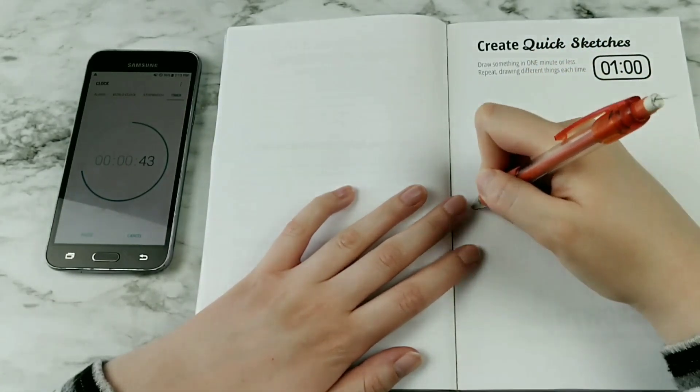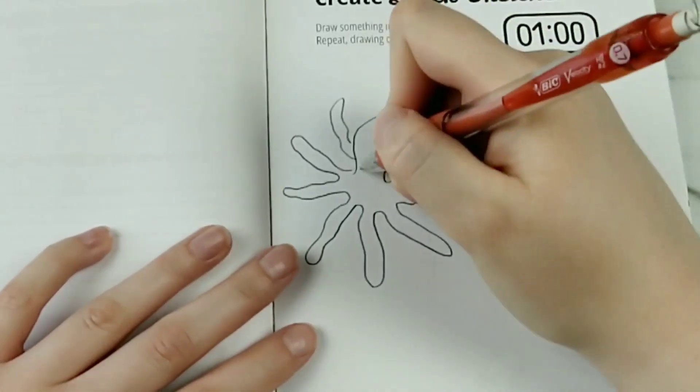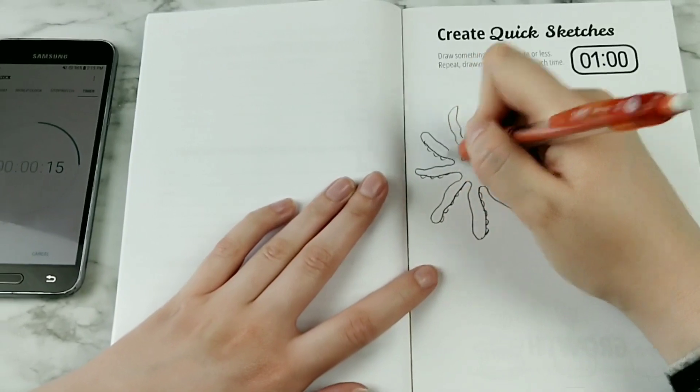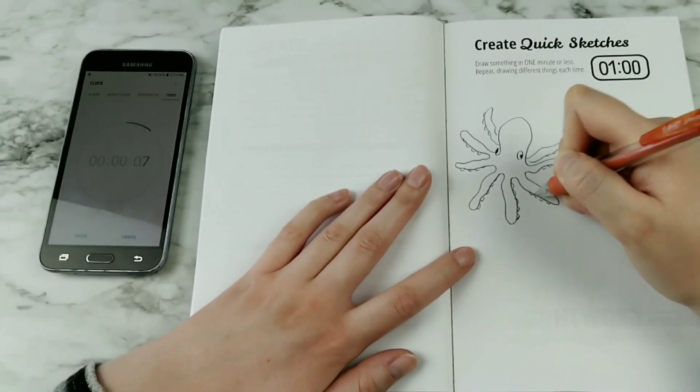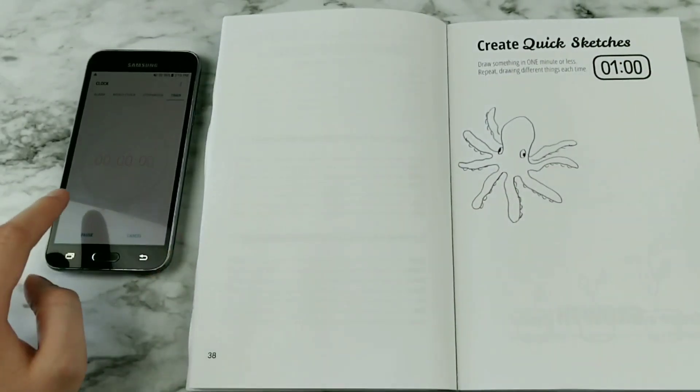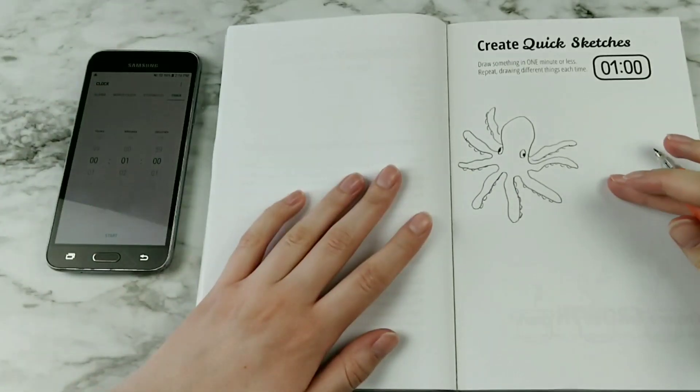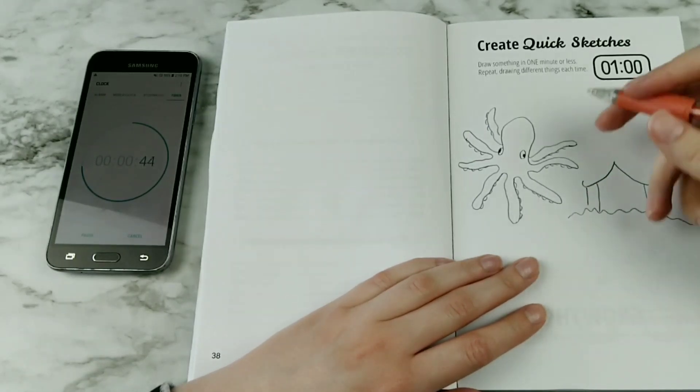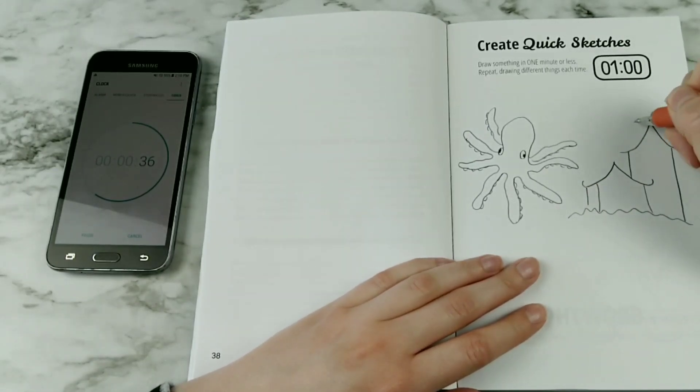I guess I should have decided what I wanted to draw before I started the timer, but hindsight's 20/20. This page was way more pressure than I thought. That one was kind of underwhelming, I think we can do a lot better than that. For this next one I wanted to try and draw a haunted house, but the pressure of the clock was definitely getting to me.